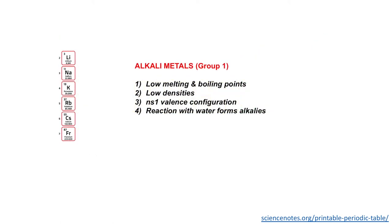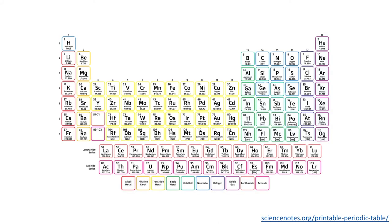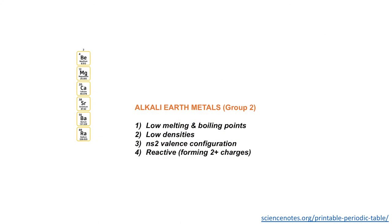We have our alkali metals in group one. These typically have low melting and boiling points, low densities, and they have one valence electron. In the next group we have what's known as alkaline earth metals. These also have low melting boiling points and low densities, but now they have two valence electrons.